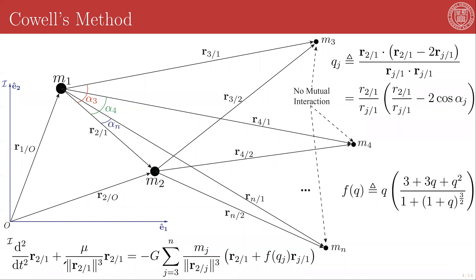So if we are allowed to neglect the interactions between these two bodies, then our two-body differential equation with this perturbation due to external perturbers has this form: negative g times the sum of all the perturbers from j equals 3 to n of the mass of each perturber m sub j divided by the norm of the distance between our orbiting body and the perturber r2 relj cubed in the direction of r2 rel1 plus f of qj in the rj rel1 direction.